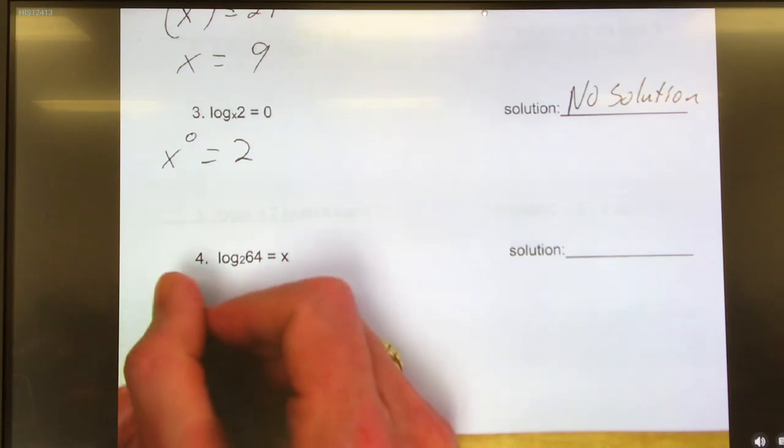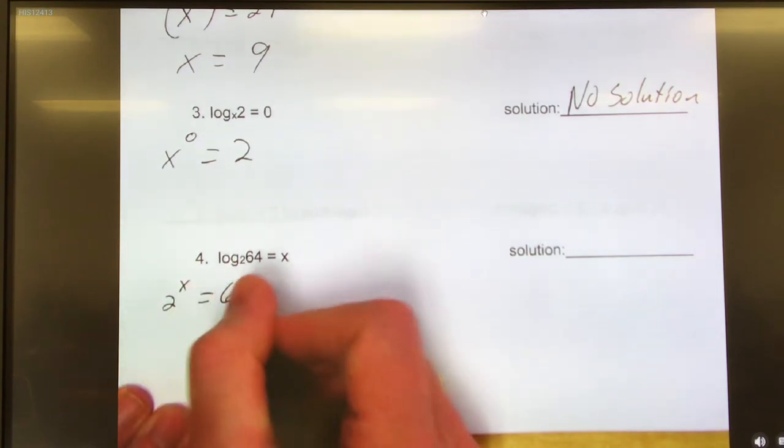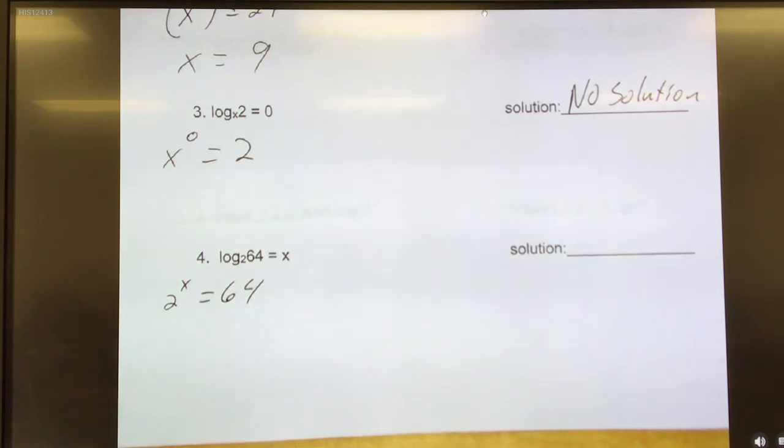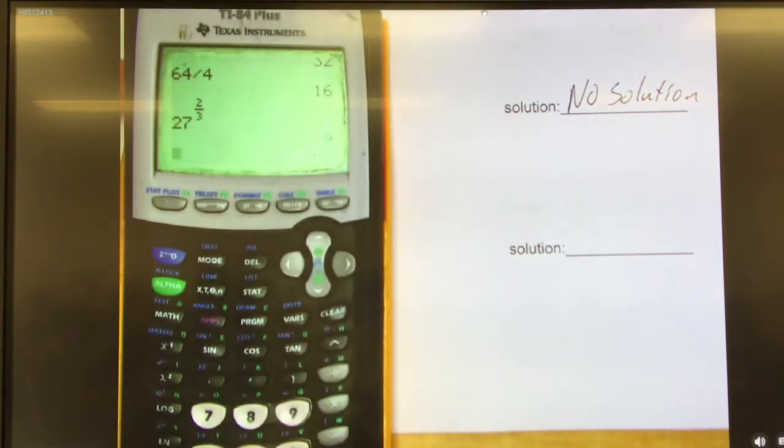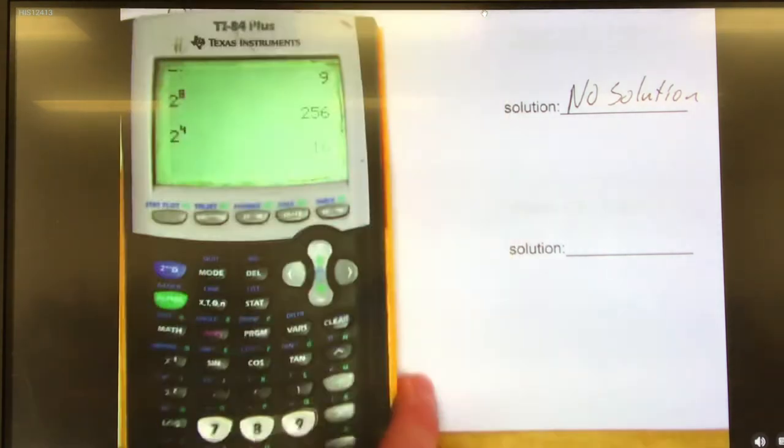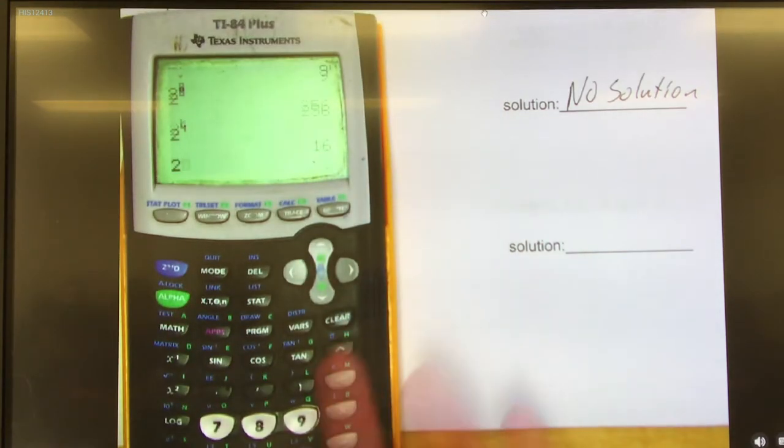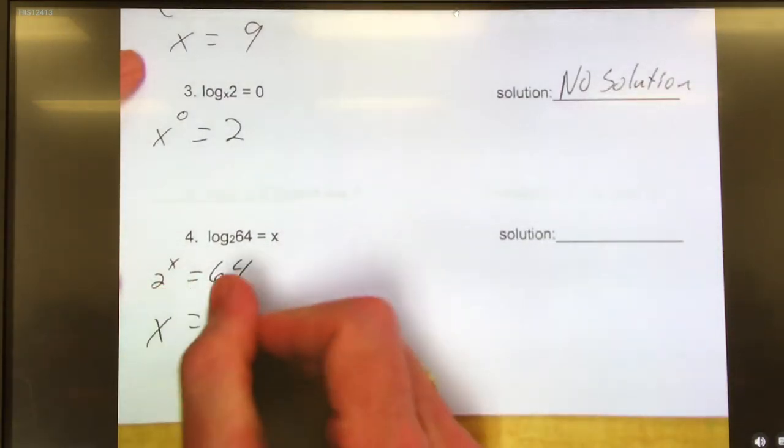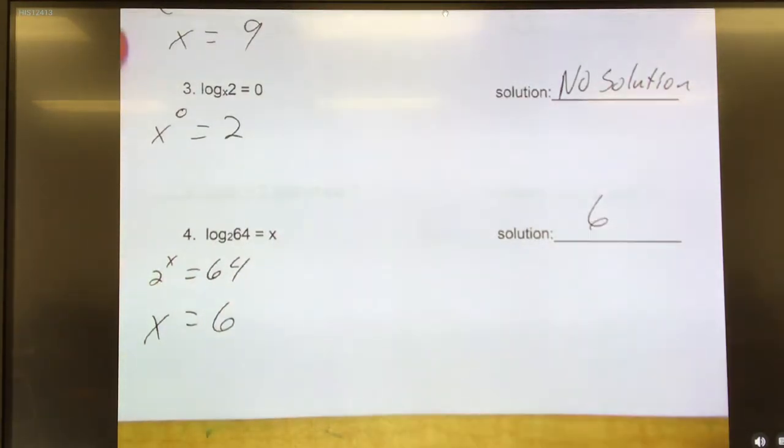Next one. We have 2 to the x power equals 64. Someone wants to know 2 to what power is 64? You said 8? Let's try 2 raised to the 8th power. That's 256, too big. 2 raised to the 4th is 16, too little. 2 raised to the 6 is 64. Money. So x equals 6.